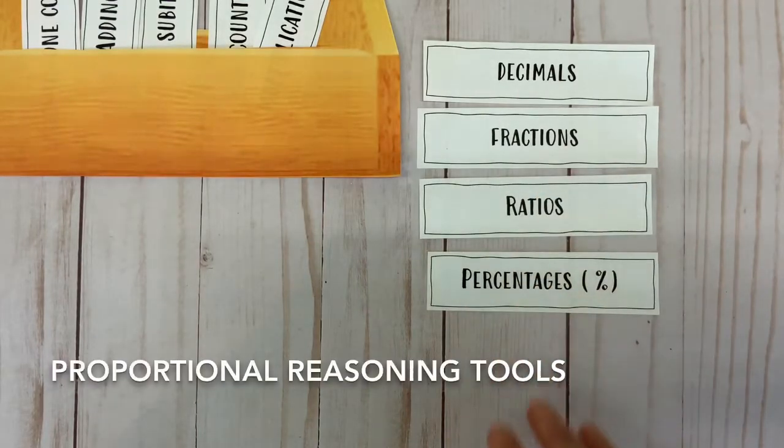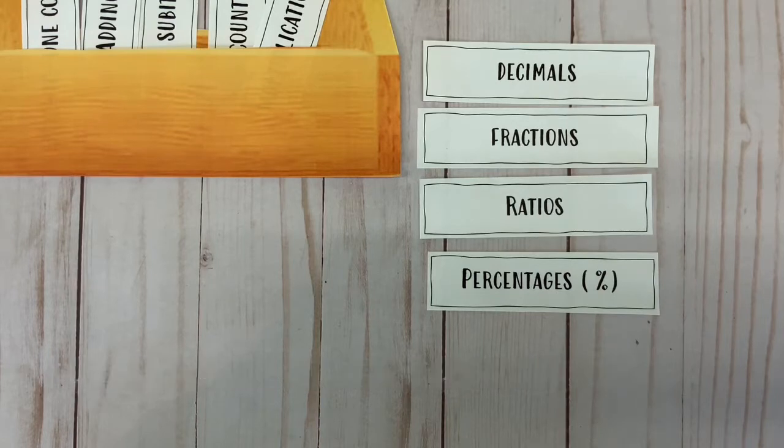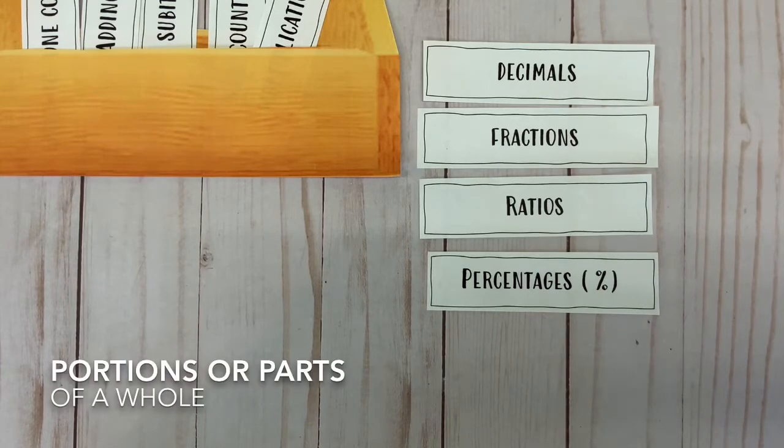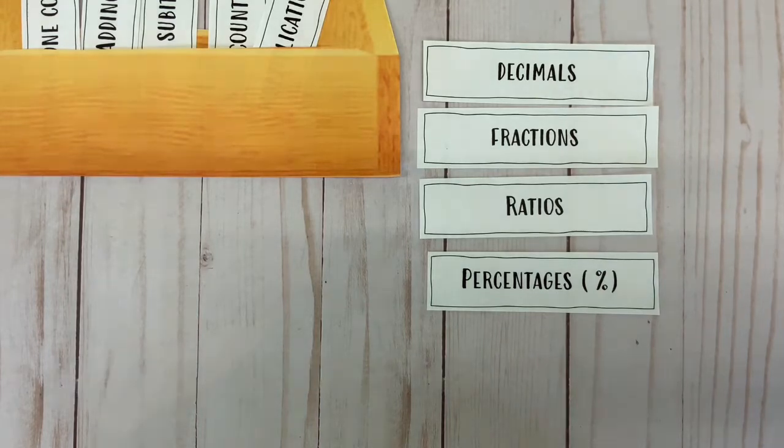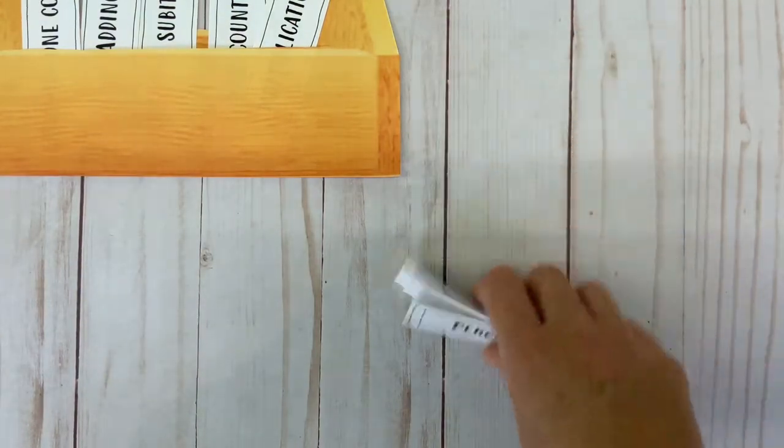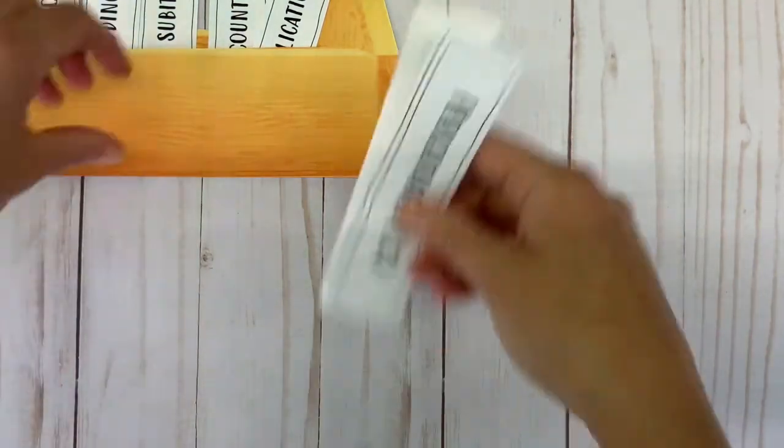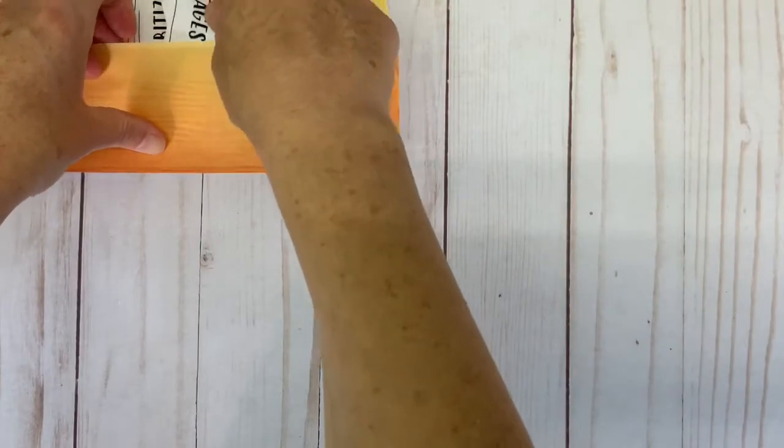These are called proportional reasoning tools and they all help us communicate information about portions or parts of a whole. It's okay if you're not familiar with them all, but we are curious to know which ones are the most useful for you.